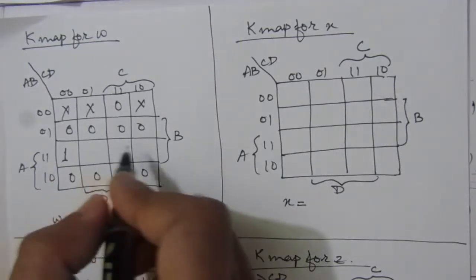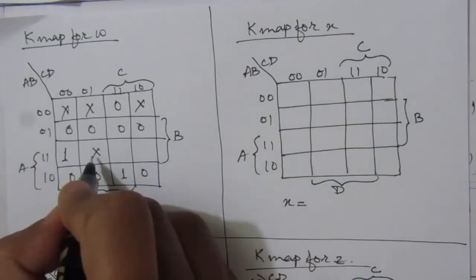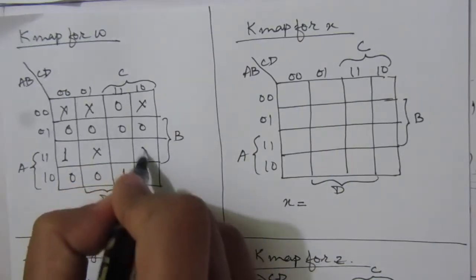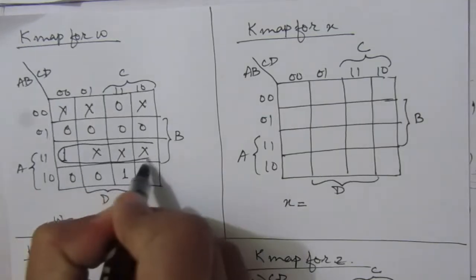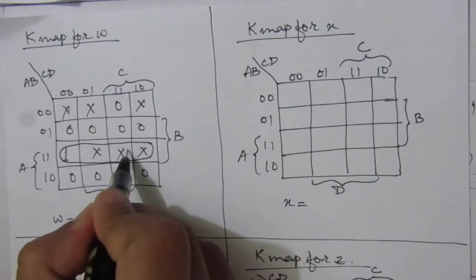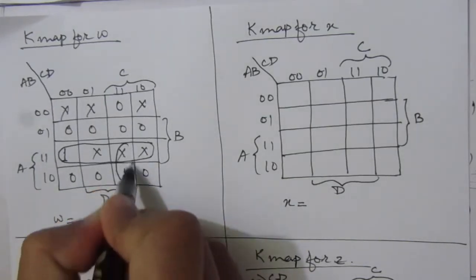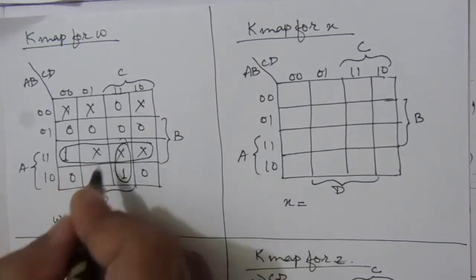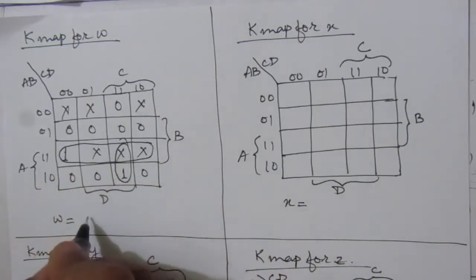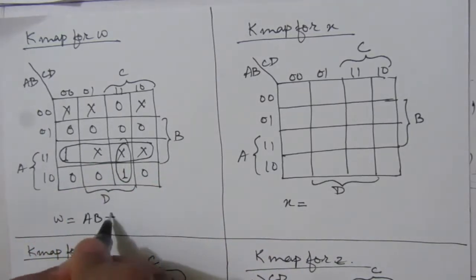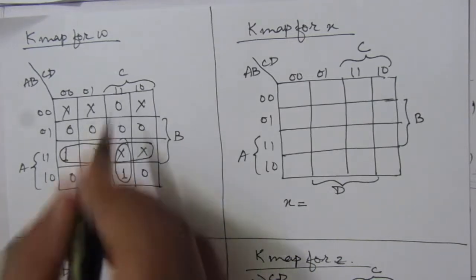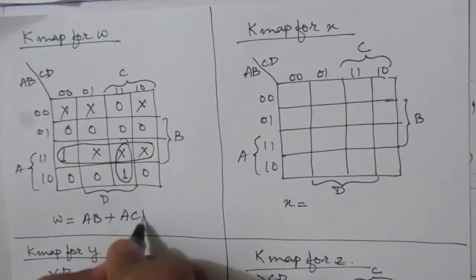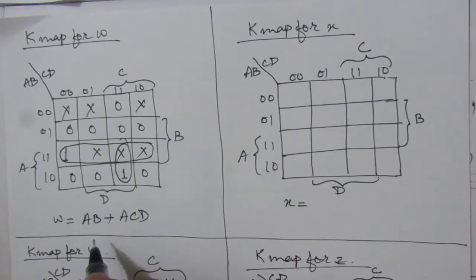The remaining values 13, 14, and 15 are again don't care conditions. From the K-map groupings, W equals AB plus ACD — this is the Boolean expression for W.